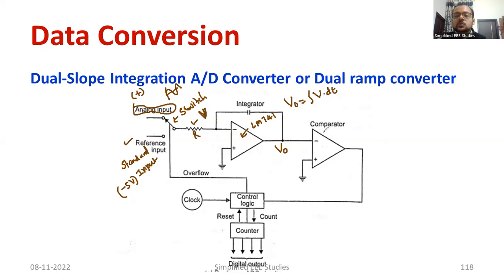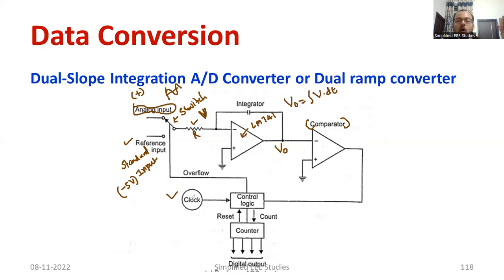The output of the integrator passes through a comparator — you can use the same op-amp IC as a comparator. The comparator output is given to a logic circuit made up of logic gates. The logic control generates timing with the help of a clock at a certain frequency. Whatever output you get from the comparator, with respect to the clock, it is converted using a counter that counts zero, one, two, three, and so on.